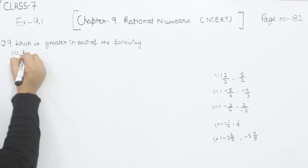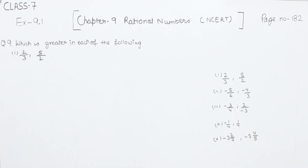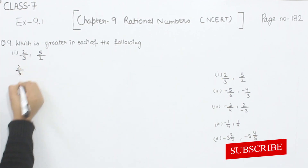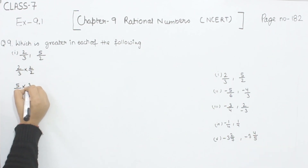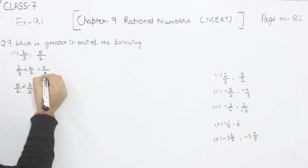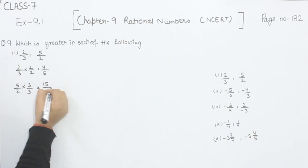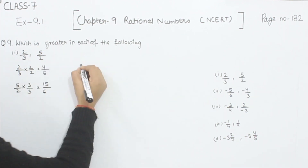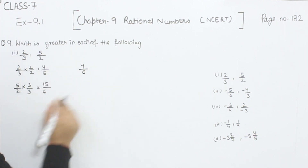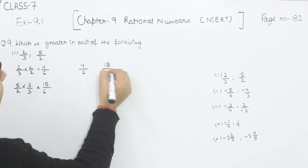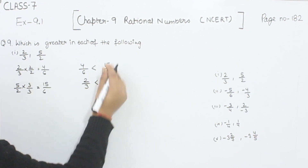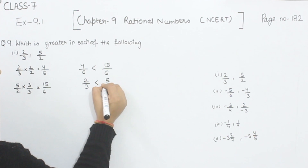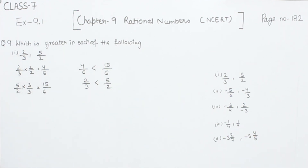In the first part we have 2/3 and 5/2. For comparing, the denominators should be the same, so we are going to multiply the rational numbers with each other's denominator. So 2×2=4, 3×2=6, 5×3=15, and 3×2=6. At the place of 2/3 we write 4/6, and at the place of 5/2 we write 15/6. So 15/6 is greater, and 15/6 represents 5/2, so 5/2 is the greater one.